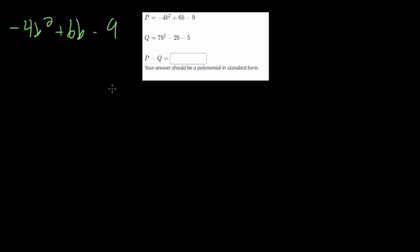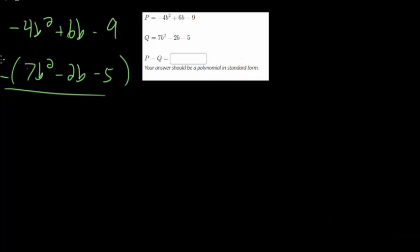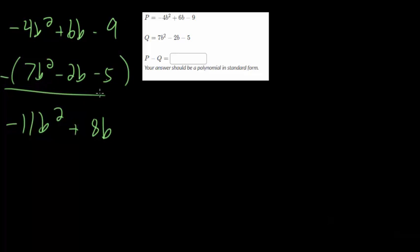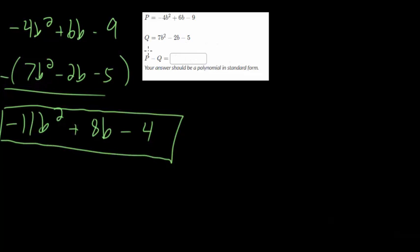Now we're starting with P and subtracting Q from it, and we can do this in a column. So we have minus 4b squared plus 6b minus 9. We're subtracting the whole polynomial, so you have to put it in parentheses: 7b squared minus 2b minus 5. You should distribute this negative and then just add them. Minus 4b squared minus 7b squared is minus 11b squared. Then 6b minus negative 2b is the same as adding 2b, so that's 8b. And minus 9 minus negative 5 is minus 9 plus 5, which is minus 4. So minus 11b squared plus 8b minus 4 is our final answer for P minus Q.